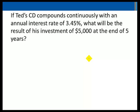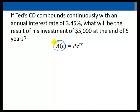Example: if Ted's CD compounds continuously with an annual interest rate of 3.45%, what will be the result of his investment of $5,000 at the end of 5 years? We're using the formula A equals P times E raised to the power RT. We're trying to solve for A, so P equals 5,000, R equals 0.0345, and T equals 5.